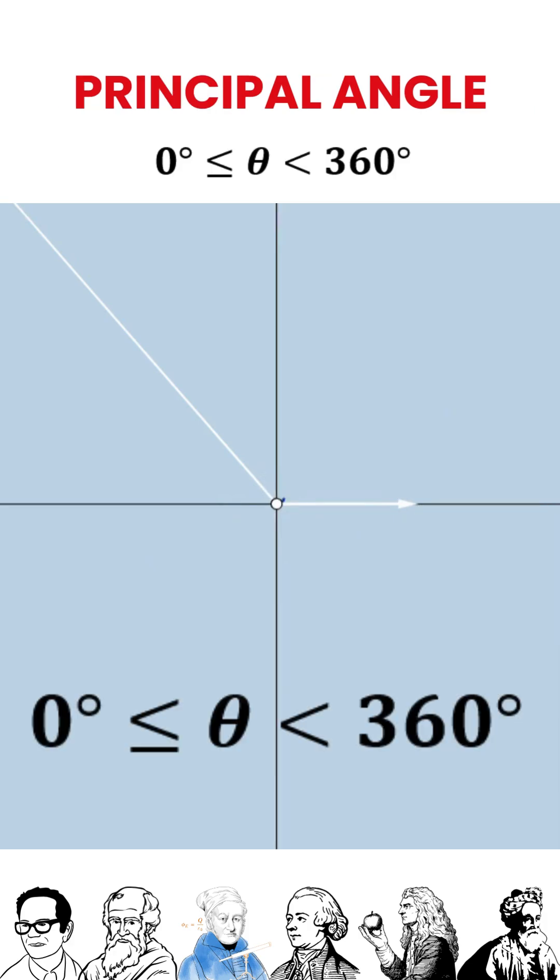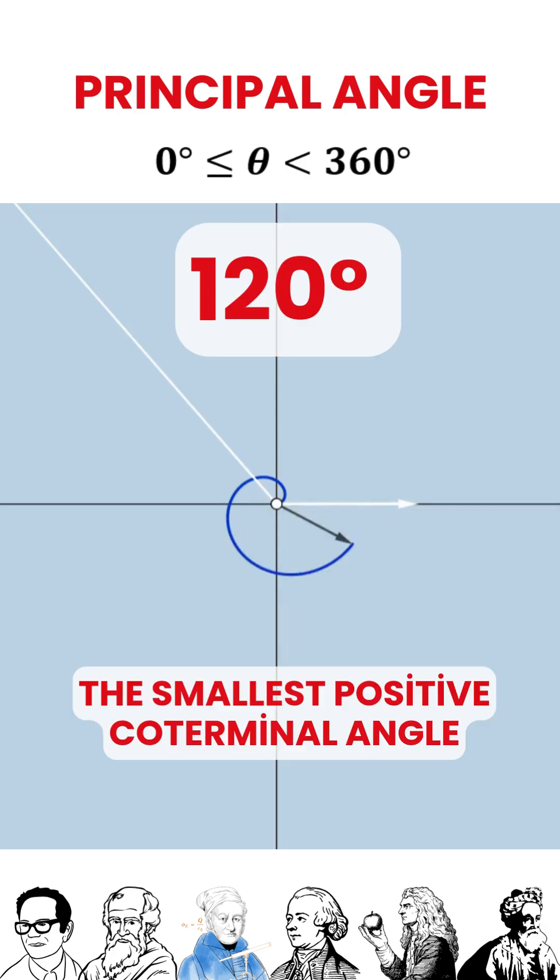The principal angle is the counterclockwise angle between the initial side and the terminal side in standard position. Its value is always between 0 degrees and 360 degrees. In other words, it is the smallest positive coterminal angle.